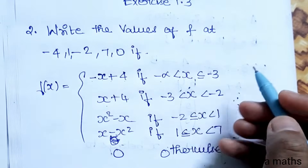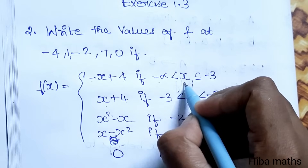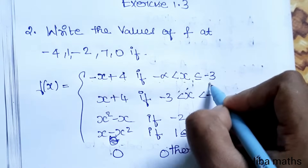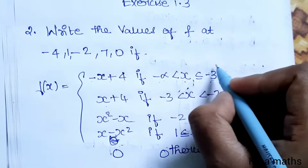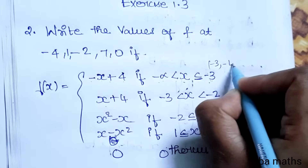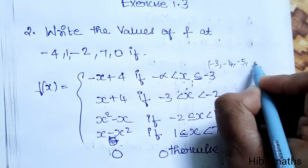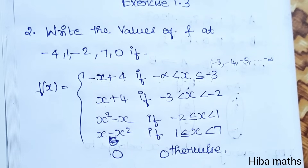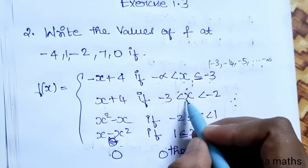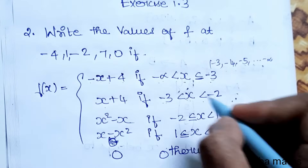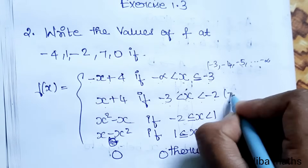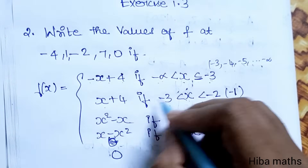We will apply for x values greater than minus infinity and less than or equal to minus 3. So this is the starting point; minus 3, minus 4, minus 5 up to minus infinity — we apply 2x plus 4. If x is greater than minus 3 and less than minus 2, that interval does not include minus 3 or minus 2, so we apply the next function.